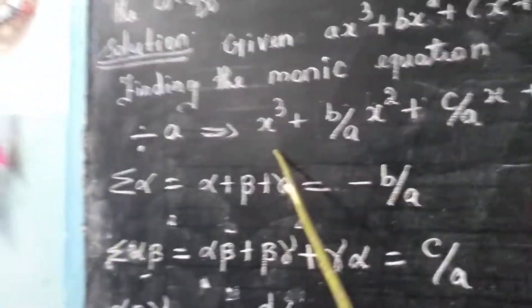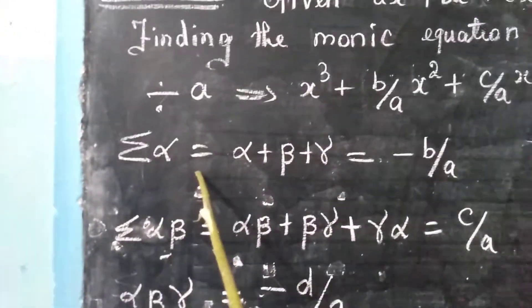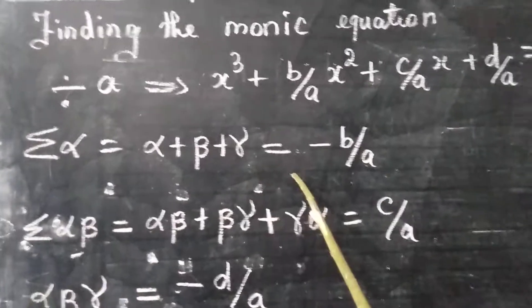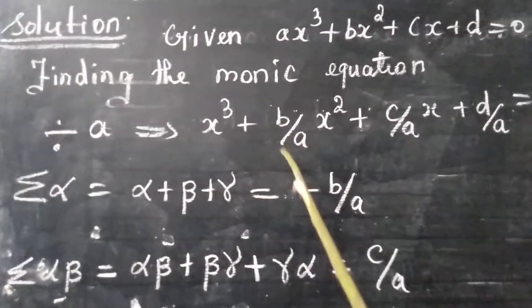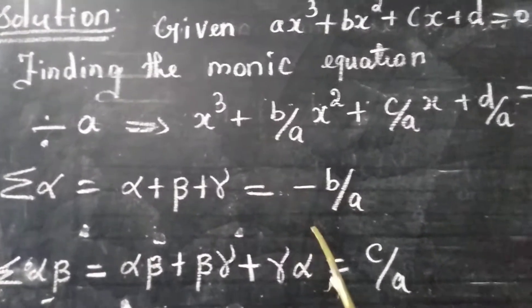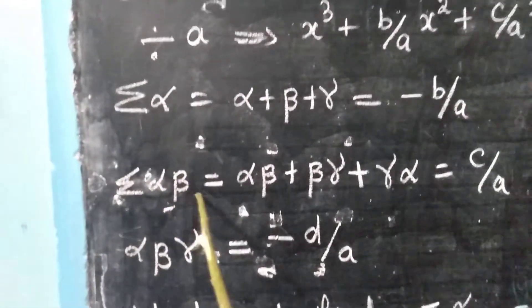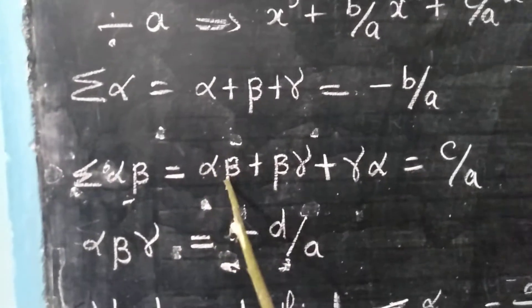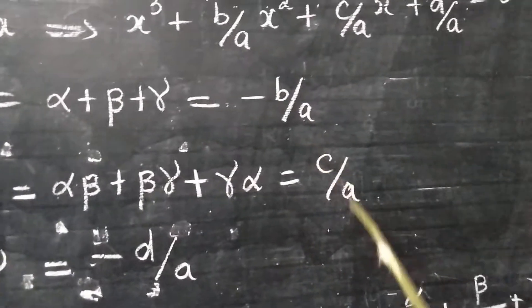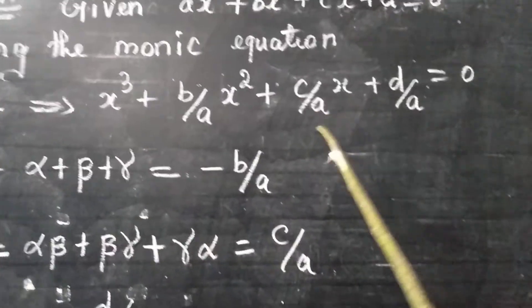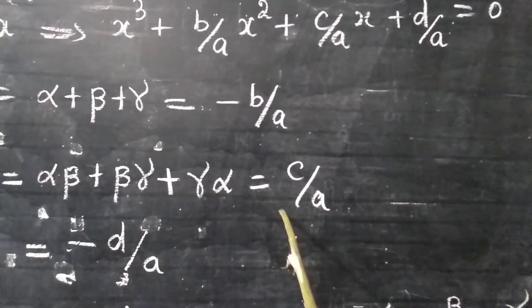Now according to Vieta's formulas, we are trying to find sigma alpha, that is the sum of all the roots, which is equal to — we take it from the x square coefficient, that is B by A, and we have to take the opposite sign, so minus B by A. Next, sigma alpha beta equals alpha beta plus beta gamma plus gamma alpha, which is equal to C by A. This comes from the x coefficient, and we take the same sign — since it is positive here, we take it as positive.